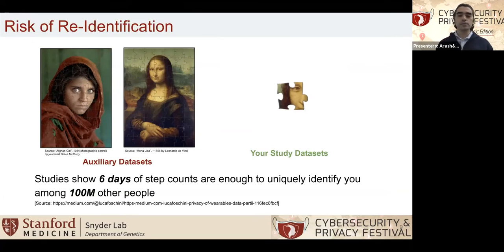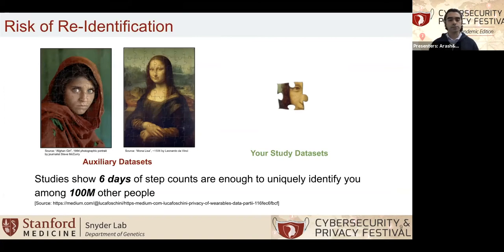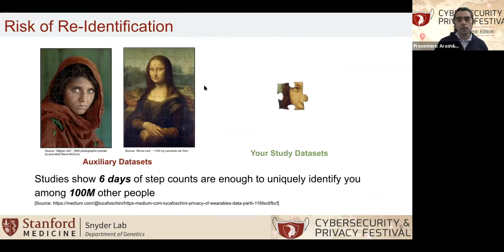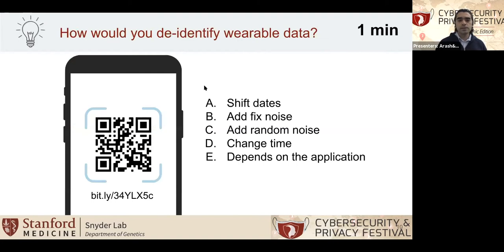For instance, if I donate two weeks of my data to a study and I tested positive, then an auxiliary dataset — say, Fitbit — would be able to re-identify me. So here's another question: how would you de-identify wearable data? You have some options: shifting dates, add fixed noise, add random noise, change time, or depends on the application.